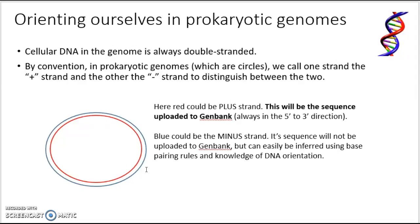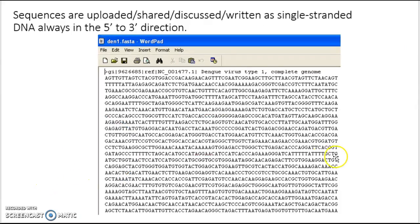The blue then could be the minus strand, and its sequence will actually not be uploaded to GenBank, but you can infer it if you know the base pairing rules for DNA and you know that DNA is anti-parallel. We're using the terms plus and minus here, and I want to point out that terminology has an entire alternative meaning — referring to which portion of DNA is used as the template for transcription — which is very confusing, and you'll have to work to keep it straight. The plus strand will be written 5' to 3', and it will be the sequence you see in GenBank or other sequence repositories.